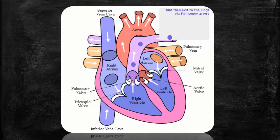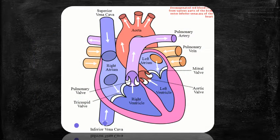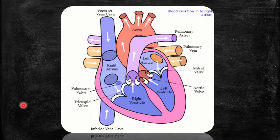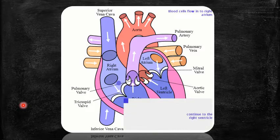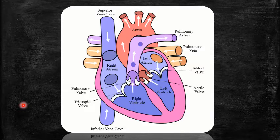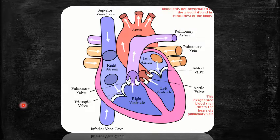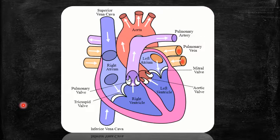After discussing the structure of the human heart, we need to know about the working of the human heart. Firstly, deoxygenated blood enters the right atrium and then continues toward the right ventricle. From the right ventricle it moves through the pulmonary artery toward the lungs. Similarly, oxygenated blood enters the left atrium, then continues toward the left ventricle, and from the left ventricle it moves through the aorta toward all body parts.